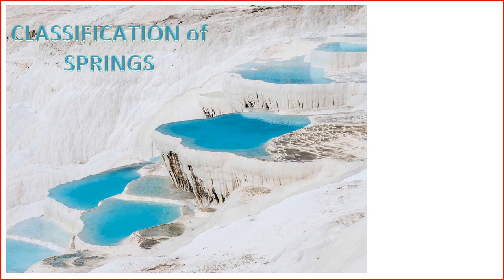6. Perennial Springs — perennial springs have a continuous flow throughout the year. They provide a reliable source of water and are essential for supporting ecosystems and human activities. 7. Fossil Springs — also known as paleo springs, were once active but have become inactive over geological time. They may still have a visible spring mound or channel. 8. Limestone Springs — limestone springs are associated with limestone or karst landscapes. The water emerges through openings or conduits in the limestone, leading to unique geological formations.